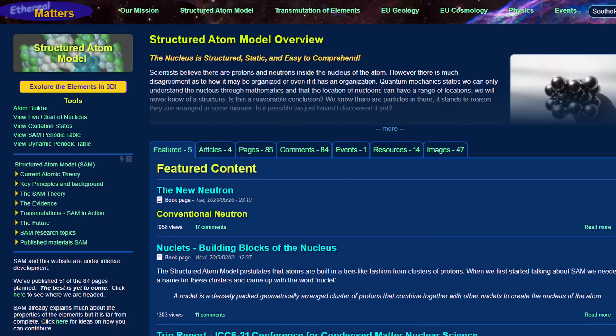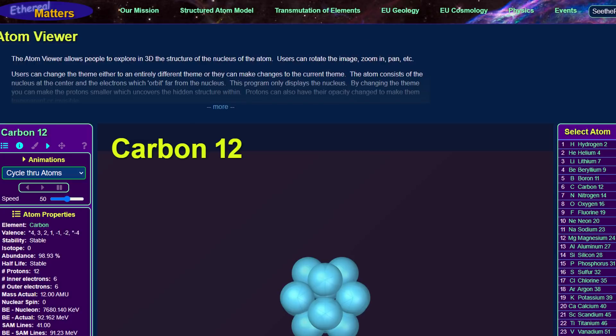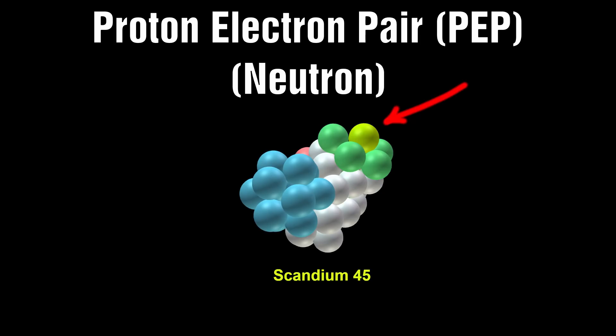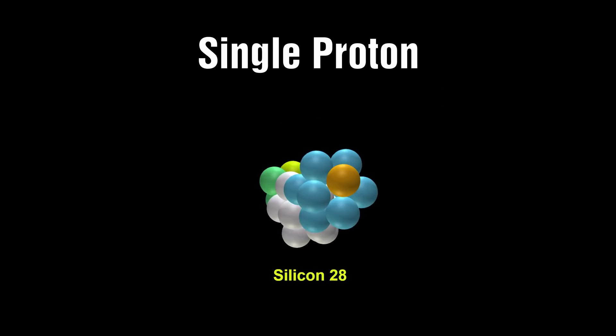If you have had a chance to look at the SAM nuclei on the ethereal matters website, then you may be interested to know that the colors you sometimes see relate exactly to these shapes and building blocks. An individual proton-electron pair, or in the mainstream neutrons, are marked in yellow and a single proton is marked in brown. Let's run through each of the shapes and explain why they are significant.